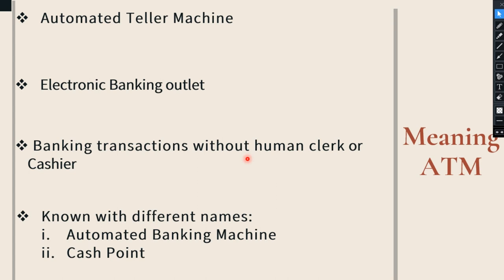It is very convenient for bank customers to deposit money, withdraw money, transfer money to various parties, check the balance, get a mini statement, make bill payments, and change the security PIN of their ATM card. Instead of standing in long queues at the bank office, customers can avail all these services through the automated teller machine — without a human clerk or cashier.